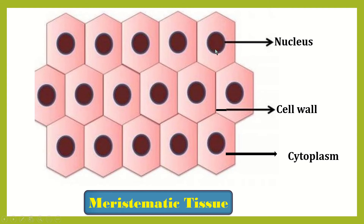This is the picture of meristematic tissue. This tissue is capable of dividing. Small and isodiametric cells are found in this tissue. A very thin cell wall is present. Dense cytoplasm with a prominent nucleus is present in this tissue. Vacuole is usually absent in meristematic tissue, and no intercellular space is present.